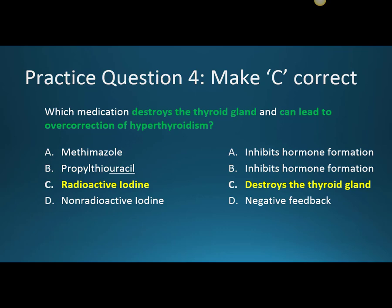The next question relates to radioactive iodine: which medication destroys the thyroid gland and can lead to overcorrection of hyperthyroidism? The answer is C, radioactive iodine. It works to specifically destroy the thyroid gland, but there is no precise known amount it will destroy until follow-up. It may destroy too much, causing the patient to become hypothyroid and require synthetic thyroid long term. Methimazole and PTU inhibit thyroid hormone formation, while non-radioactive iodine acts as negative feedback on thyroid hormone formation.